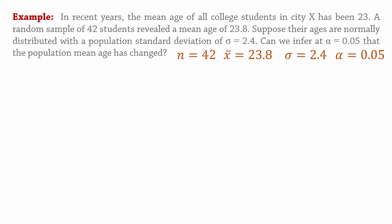Since we're testing if the population mean age has changed from 23, the alternative hypothesis will be that the mean is not equal to 23, and the null hypothesis will be that the population mean equals 23. The significance level alpha is 0.05 or 95% confidence.